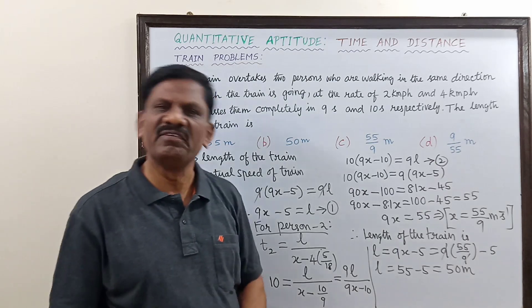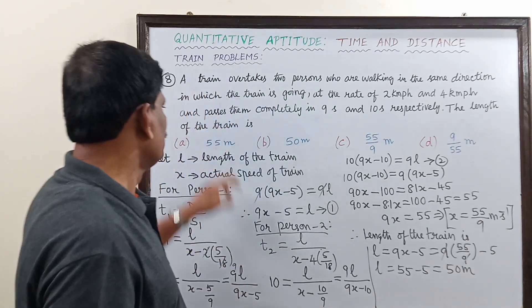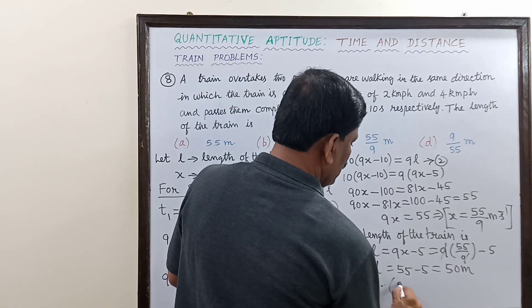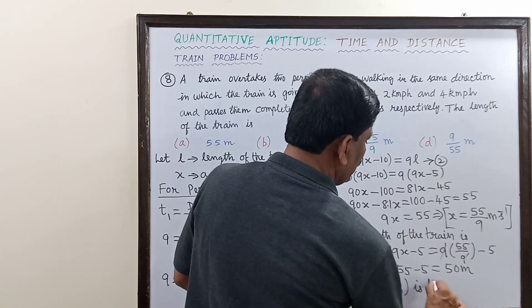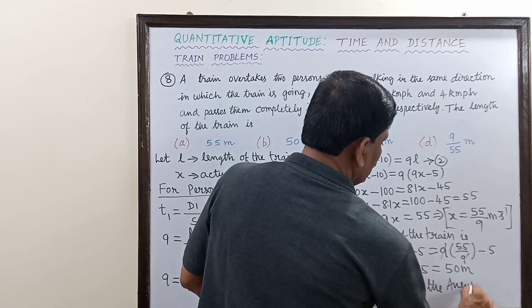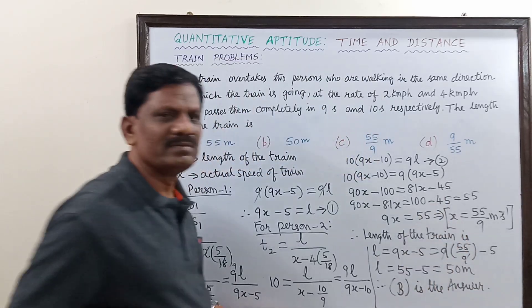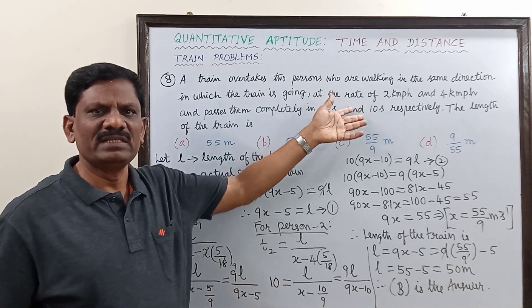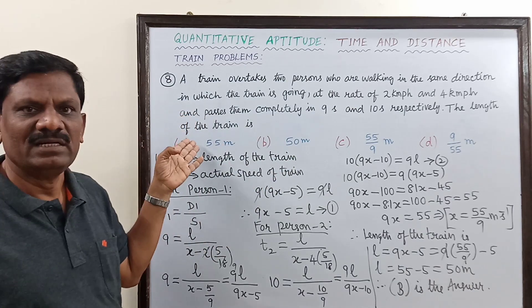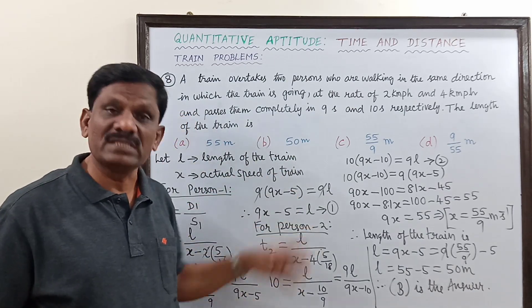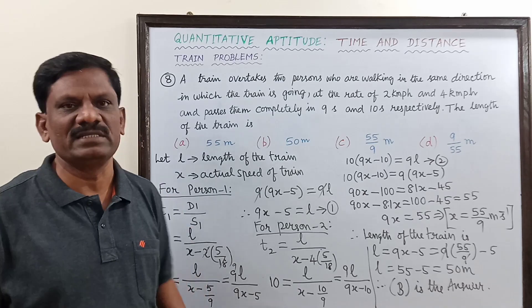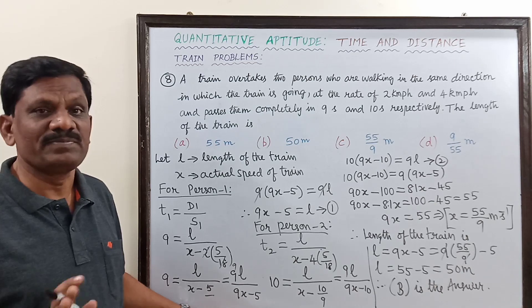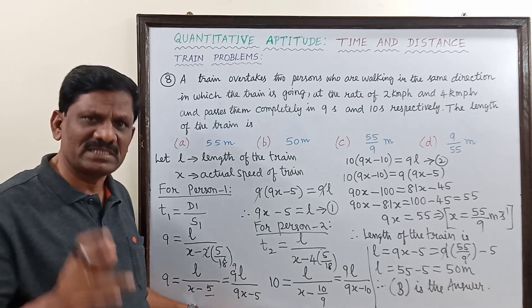The length of the train is 50 meters, so option B is the correct answer. Such problems require practice — we have already done similar problems in the previous class. Solve two or more such problems and you will become an expert. This topic is definitely expected in any competitive exam, so prepare well.